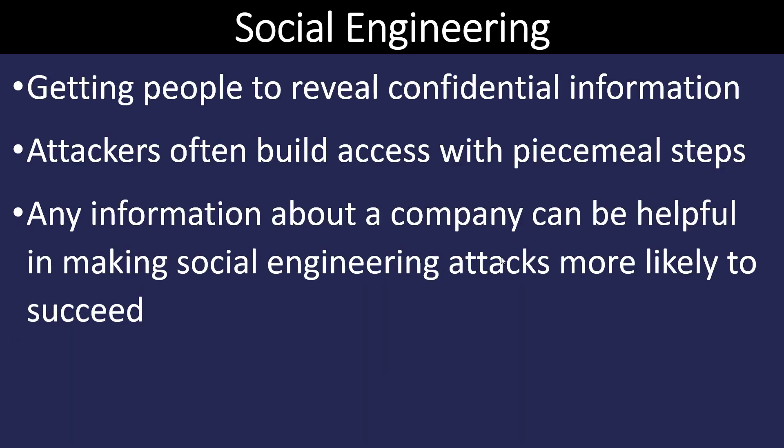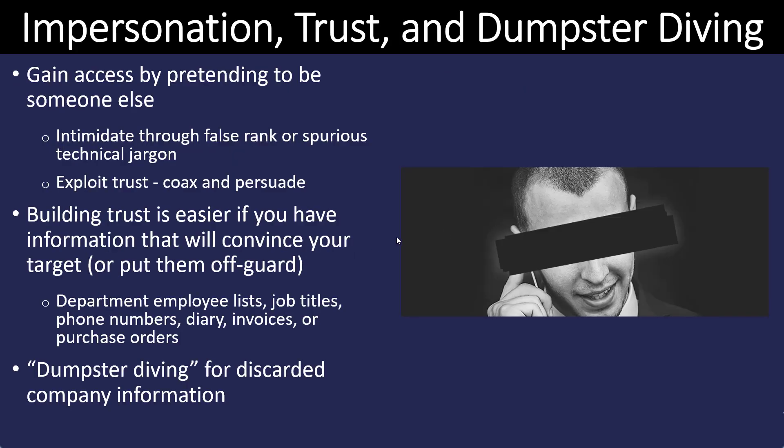Social engineering is a technique attackers use to compromise a security system. These are going to be non-technical types of attacks — sometimes done by exploiting trust with people at the company. Because attackers realize that any piece of information they can get about a company can be helpful in making further social engineering attacks, which will likely lead to some type of technical attack. Social engineering is rarely used just by itself, but it's used to get information to help an attacker plan and further plan their attack.